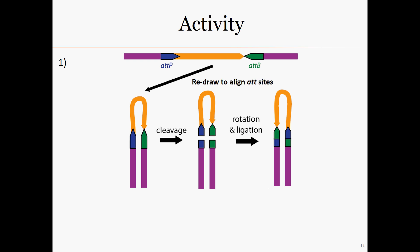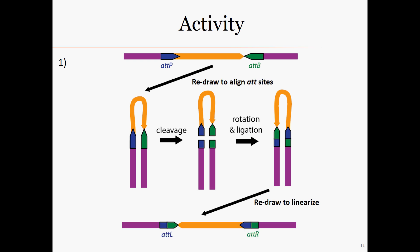Finally, redraw the product as a linear piece of DNA to see the results. The att-B and att-P sites will always result in att-L and att-R sites. To identify which is which, remember that att-L has the left side of att-P, shown in blue, and att-R has the right, or arrowhead, side of att-P. The result on our orange gene in the middle is that it is now inverted. You will have the chance to practice a few more of these in today's activity.